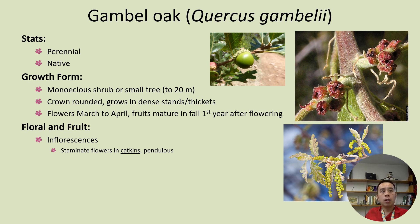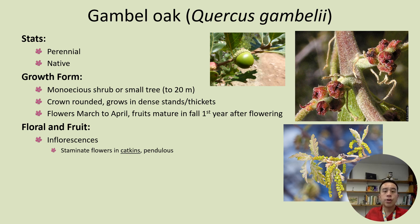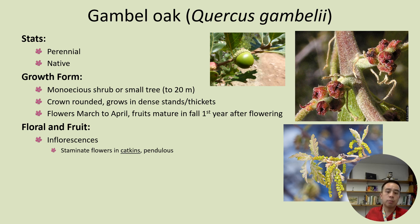The inflorescence types are what we call catkins, which are essentially a slim cylindrical flower cluster or spike, as you can see in this bubble. Catkins usually have very inconspicuous or no petals and are usually wind-pollinated, but can sometimes also be insect-pollinated. Catkins often have unisexual flowers, even if it's a monoecious plant, so we may expect staminate flowers in the catkins, which often appear pendulous.